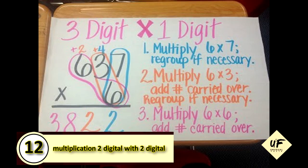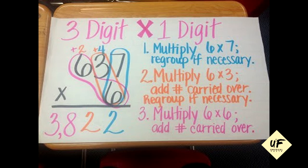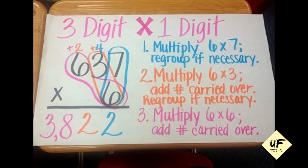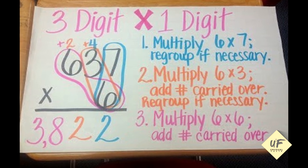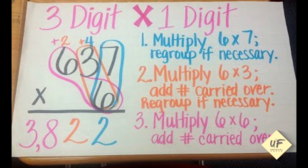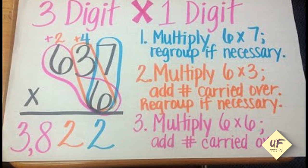Now we're getting tricky. Step number 13: Multiplication, a 3 digit with a 1 digit. Let's see if you can follow along. Step 1: Multiply 6 times 7, and then regroup if necessary. 6 times 7 is 42. You put the 2 below the 6 and the 4 above the 3 to regroup. 6 times 3 is your second step. 6 times 3 is 18 plus 4 is 22. So you put the 2 under the 3 and the other 2 above the additional 6. Now step number 3 is to multiply 6 times 6, and you'll add the carried over number. 6 times 6 is 36 plus 2 is 38. 637 times 6 is 3,822.